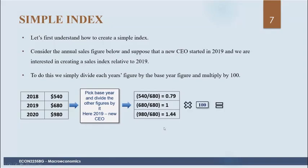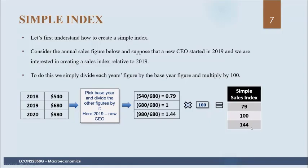It's not a percent — we're just multiplying by 100. The result is a nice, clean series of numbers. We can immediately see that after the CEO came aboard in 2019, sales increased 44%. The purpose of creating an index is to create a clean series of numbers, and we can also use it to calculate inflation.